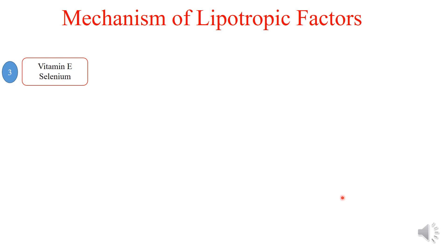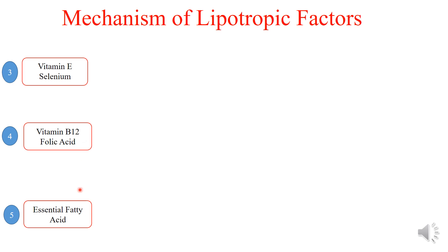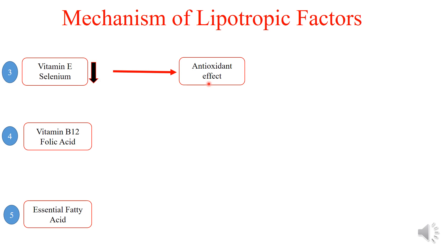The third group of lipotropic factors includes vitamin E and selenium. These are antioxidants that prevent the oxidation of unsaturated fatty acids and lipids, and therefore prevent oxidative stress. When vitamin E and selenium are deficient, there is increased oxidative stress in the body, which further causes injury to the hepatocytes that are already laden with lipids.